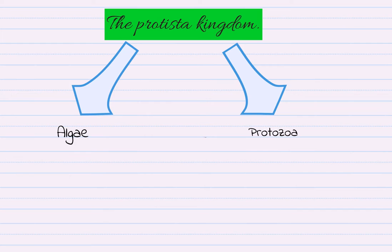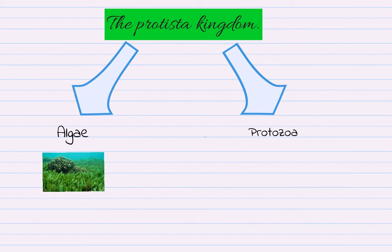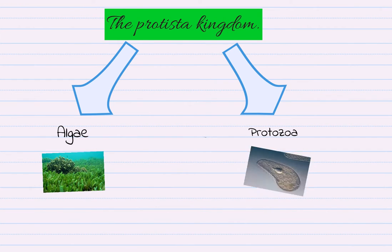The Protista Kingdom has got two different types of living things: algae and protozoa.